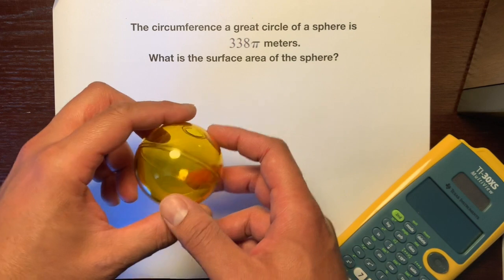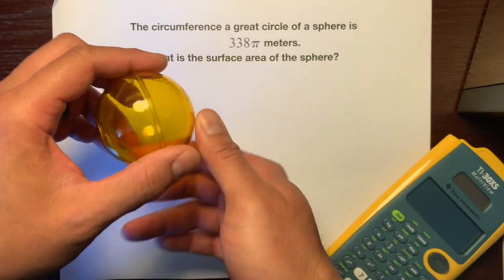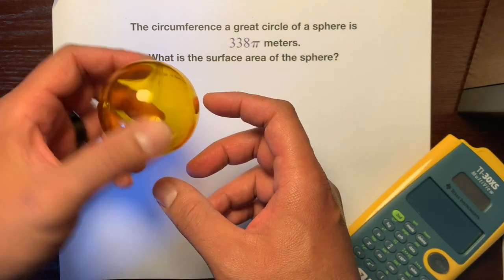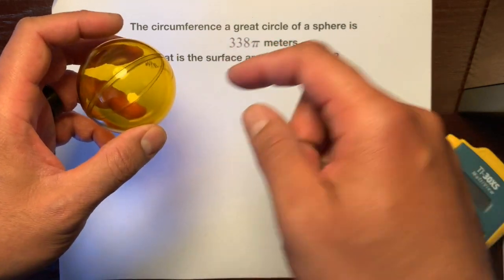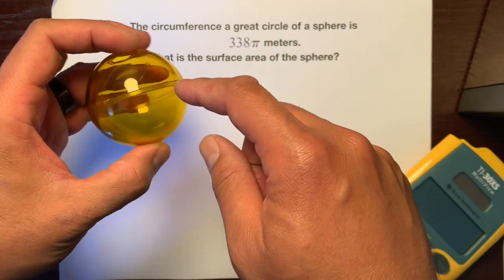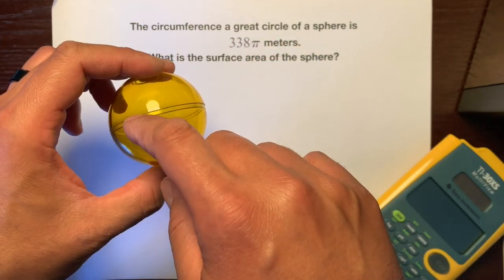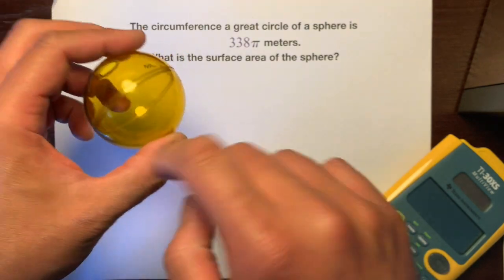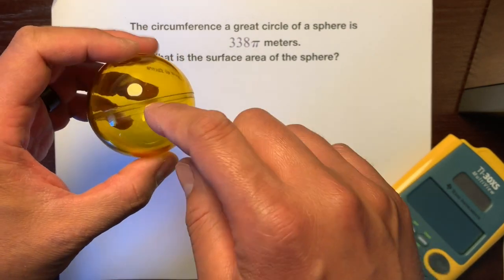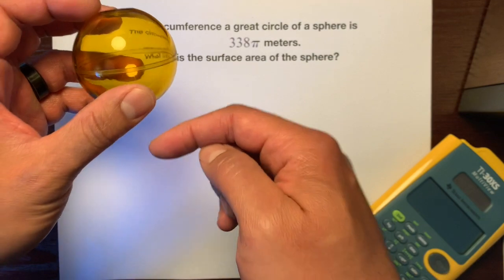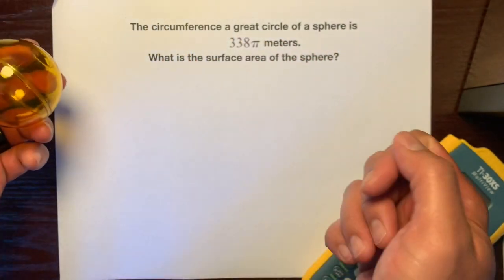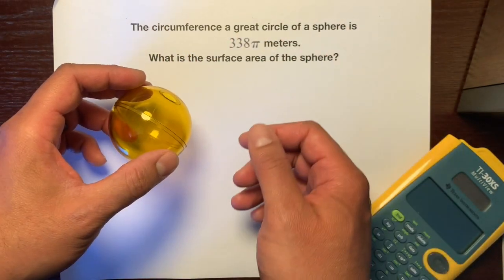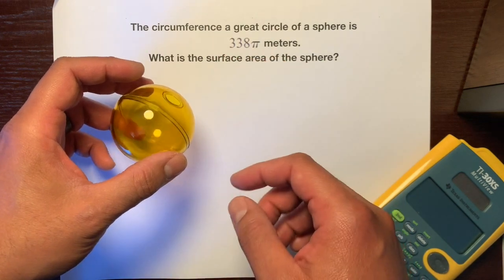So first thing is, what's a great circle? Here's a sphere. The great circle is, you can think of it as the equator of the sphere, so the distance around the sphere. That's the great circle of the sphere, or the circumference.